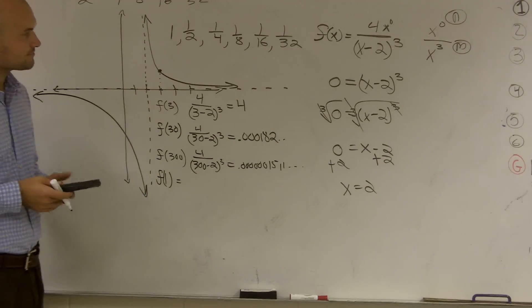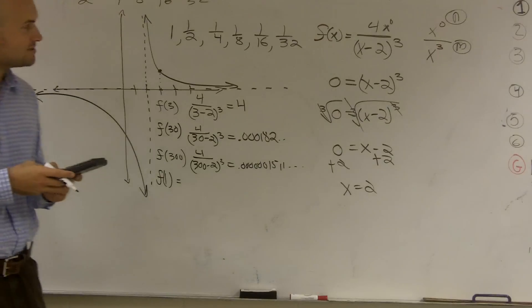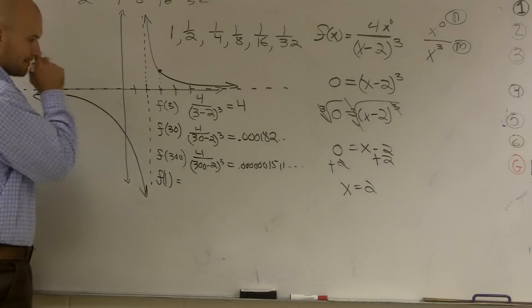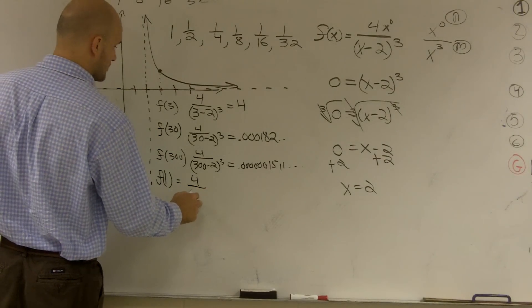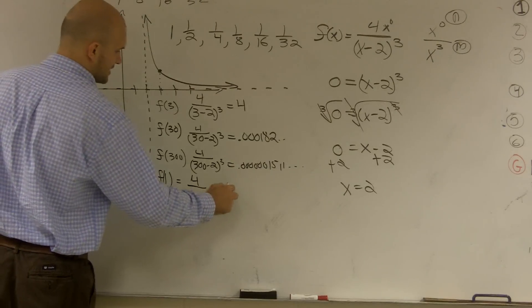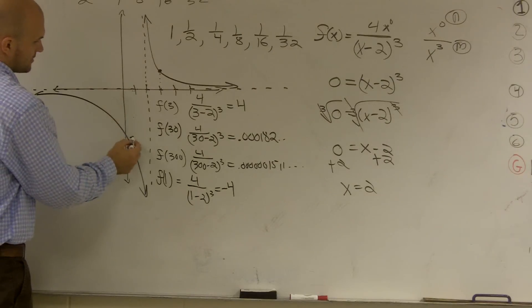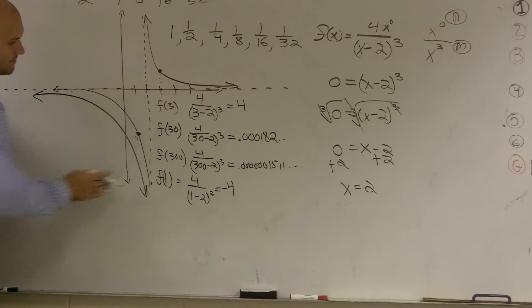So if I do f of 1, so that means that's going to give me negative 1 cubed. So that's going to give me, and I know this graph isn't perfect, but so I do f of 1, that's going to be 4 over 1 minus 2 cubed. Well, that gives me negative 4. So over 1 goes down 4. Yeah, my graph probably should be something like that.